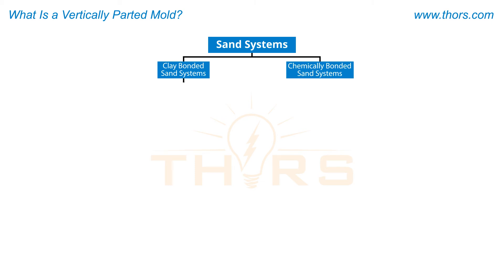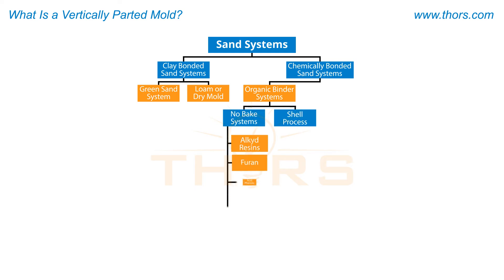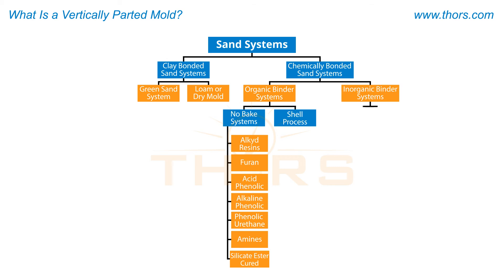Clay bonded sand systems include green sand systems and loam, or dry sand molds. Chemically bonded sand systems include organic binder systems — like no-bake systems and shell process — and inorganic binder systems, like sodium silicate systems and cement mold systems.